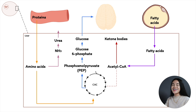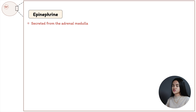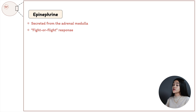Now let's move on to epinephrine. Epinephrine is secreted from the adrenal medulla when we face a stressful situation — this is known as the fight-or-flight response. For example, encountering a threat stimulates the release of epinephrine and norepinephrine to prepare the body for action or increased work. Epinephrine acts in muscles, liver, and adipose tissues.